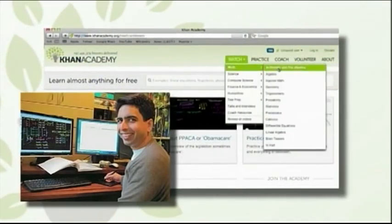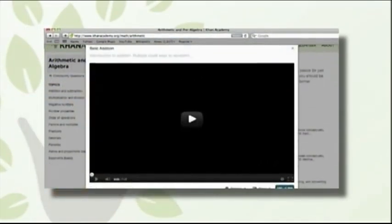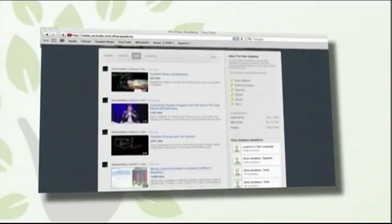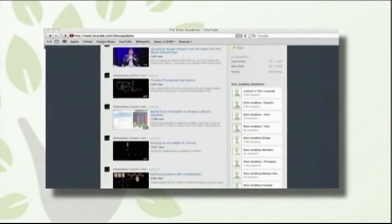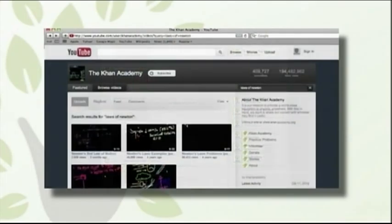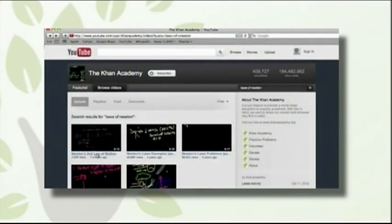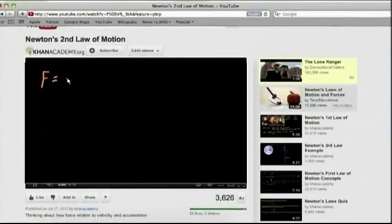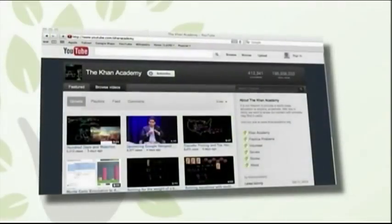It is the Khan Academy, named after its founder, 36-year-old Salman Khan, a Bangladeshi-American who quit his day job as a hedge fund manager and became a YouTube sensation. His freely available videos, and there are now over 3,000 of them, have been watched 180 million times and reach 5 million students a month on the worldwide web. They cover an enormous range of subjects from basic math to university level courses on the laws of physics, and they have a global audience and are now available in 17 different languages.